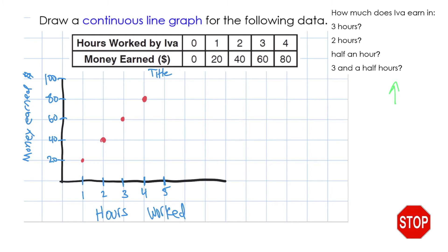So how much does Iva earn in three hours? Well, if you find the three hour mark, you line it up. You see that Iva earned $60. Same with the two hour mark like that. You see that it is $40.